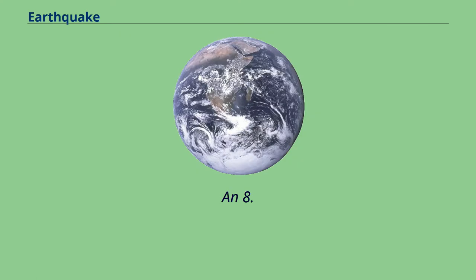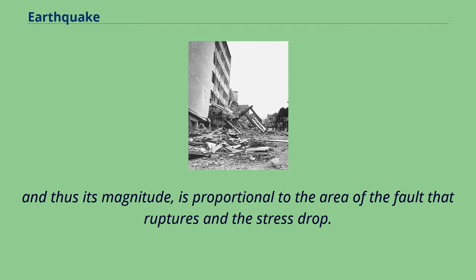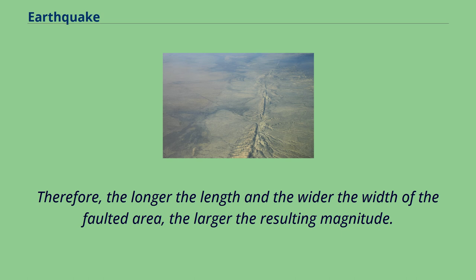An 8.6 magnitude earthquake releases the same amount of energy as 10,000 atomic bombs of the size used in World War II. This is because the energy released in an earthquake, and thus its magnitude, is proportional to the area of the fault that ruptures and the stress drop. Therefore, the longer the length and the wider the width of the faulted area, the larger the resulting magnitude.